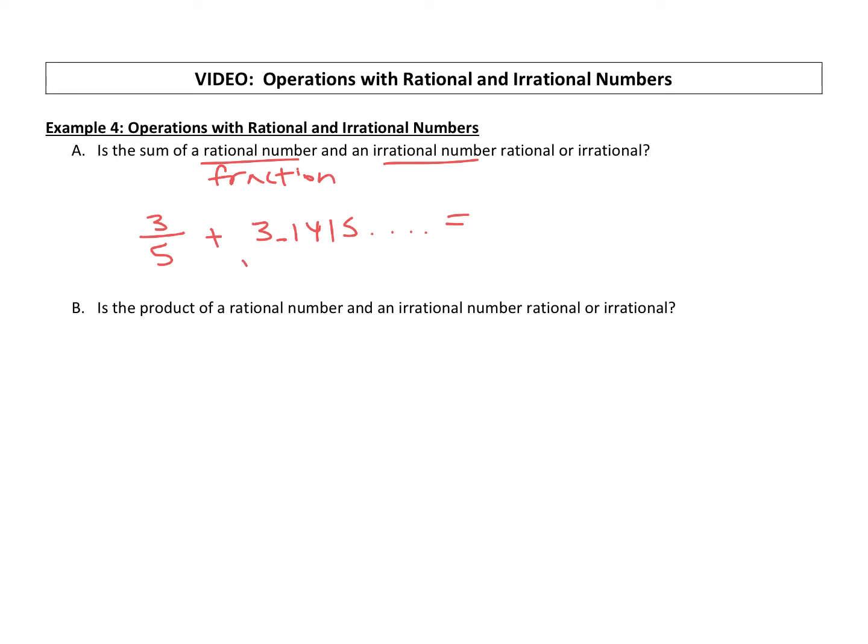Because the irrational number cannot be written as a fraction, we can't add it to a fraction. A fraction can add with a fraction, and that's it. So our answer would be irrational because you would have to have two rational numbers, two fractions, to add together and get a rational answer.